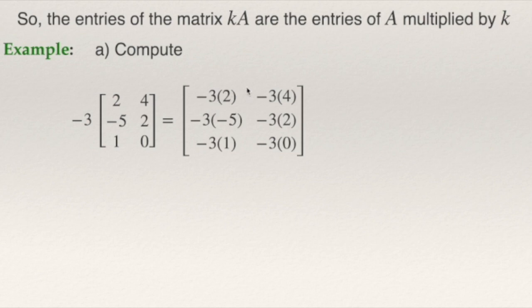So this will be the answer: negative 3 times 2, negative 3 times 4. So you have multiplied every entry of the matrix by this negative 3. If you do that, here will be negative 6, this will be negative 12.